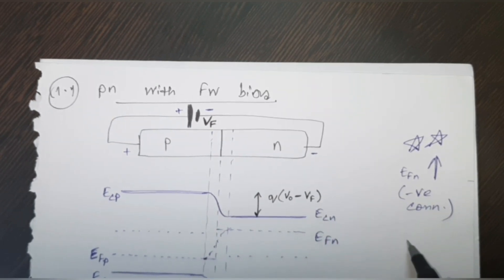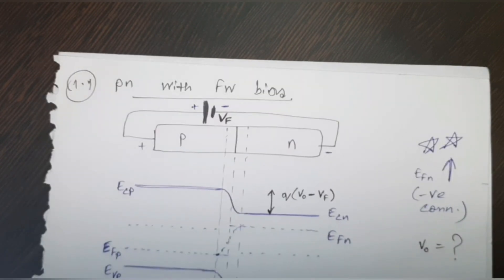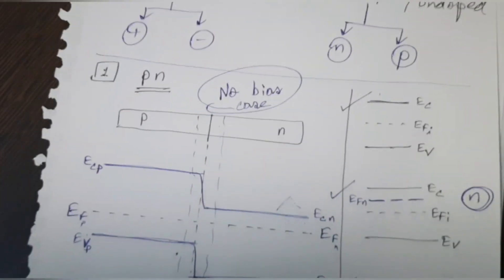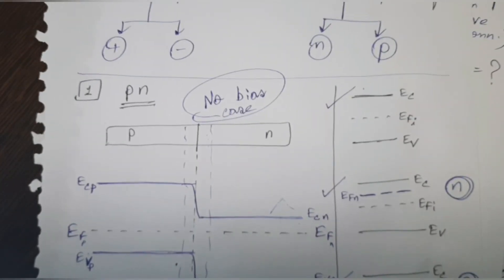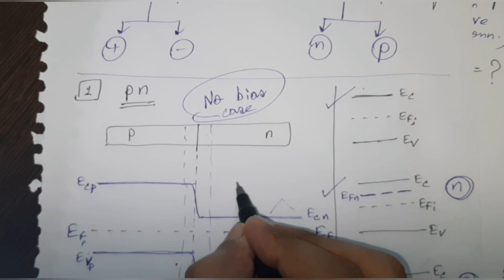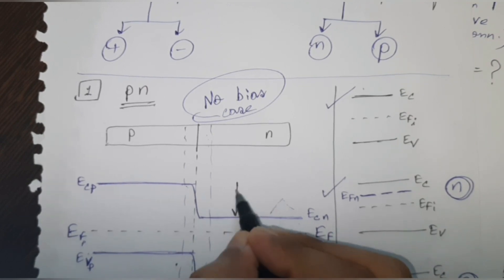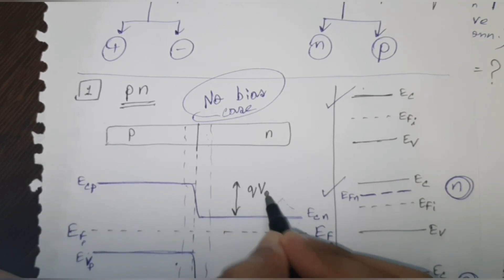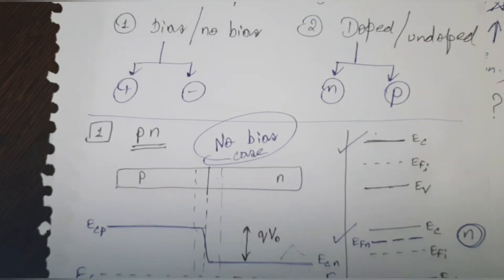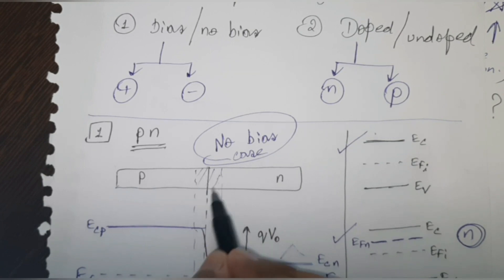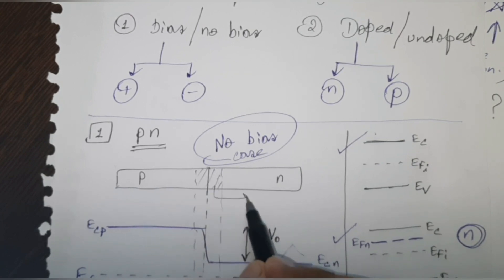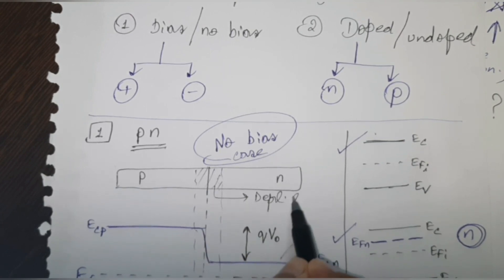It is important to label the bias here; I have represented the battery as VF because it is the forward bias case. An important note: the difference between ECP and ECN here will be Q(V₀ − VF), where V₀ is the built-in potential. In the no-bias case, ECP and ECN will have a difference of QV₀, where V₀ is the built-in potential due to the depletion region at the junction.